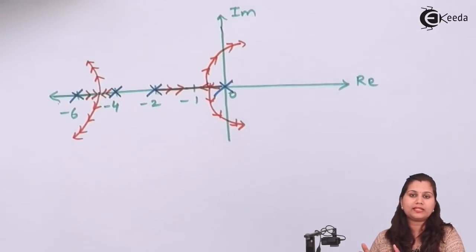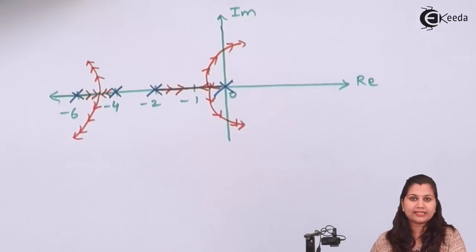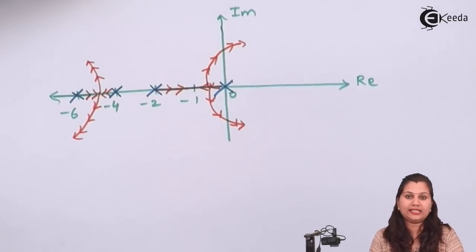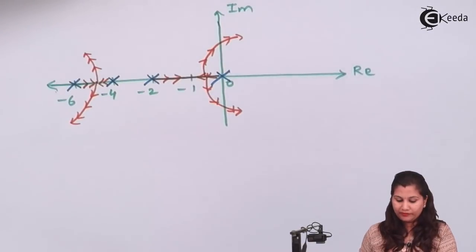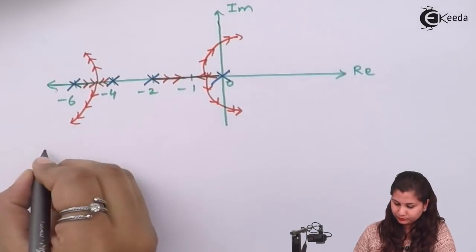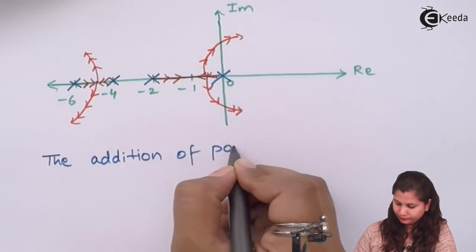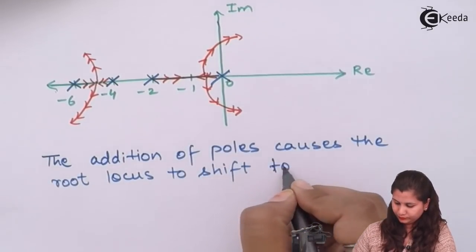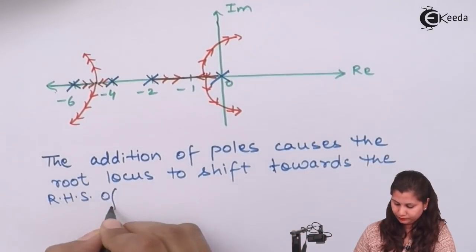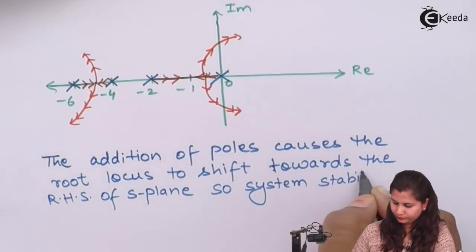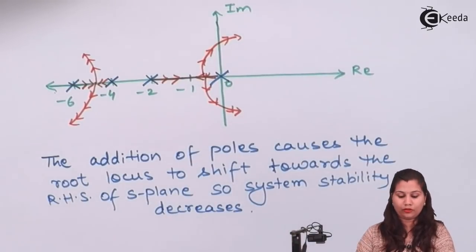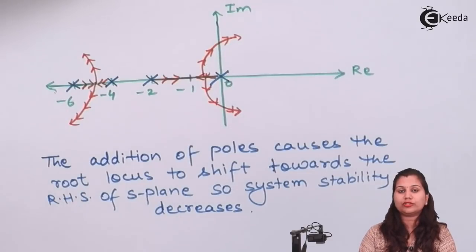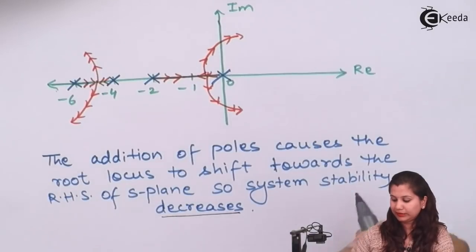This is our s-plane having the imaginary and the real axis. So the root locus is shifting towards the right hand side of the s-plane, and because the right hand side is taken as the unstable condition, we can say that the stability of the system is decreasing due to the addition of poles. This causes the root locus to shift towards the right hand side of the s-plane, and due to which the system stability decreases.